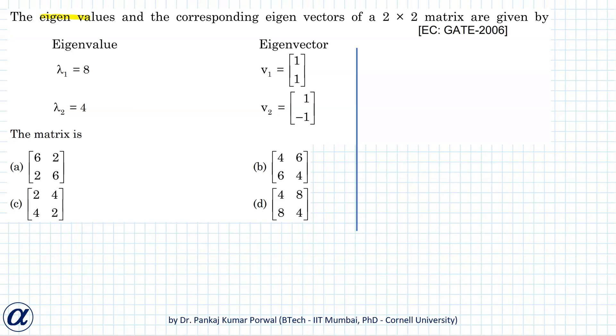In this question, we are given the eigenvalues and the corresponding eigenvectors of a 2 by 2 matrix and we want to find what the matrix is.